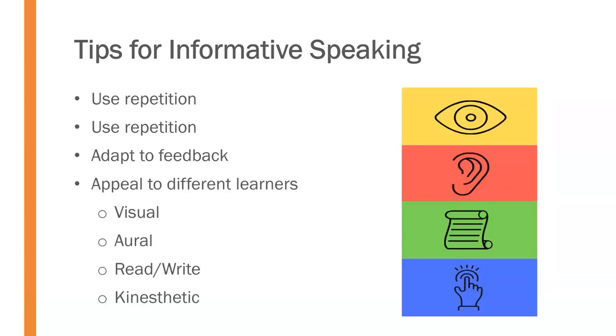We need to appeal to different learners. People have different learning styles — visual, aural, read-write, or kinesthetic. We need to do what we can to engage people at those different levels and with those different styles. Hopefully this gives you some ideas as to what we can do to be a more effective informative speaker. When you're giving a presentation where the purpose is to inform, these are some things to keep in mind that will help you be more effective.